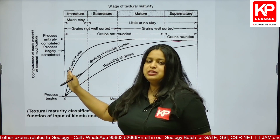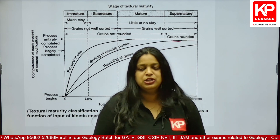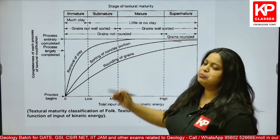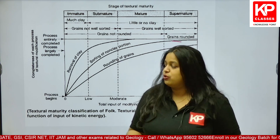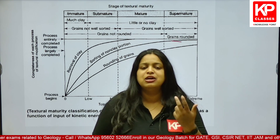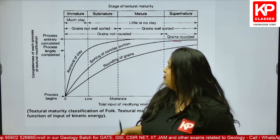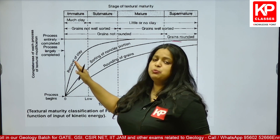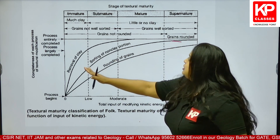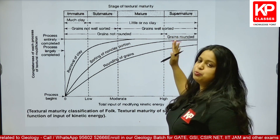With further transportation, clay present in the sediments will keep being removed. When it comes to maturity, the terminologies provided for sandstone are: immature, submature, mature, and supermature. A supermature sandstone will be well rounded, well sorted, and have zero clay content. An immature sandstone has clay content present and is composed of angular, poorly sorted grains. In between we have submature and mature sandstones.